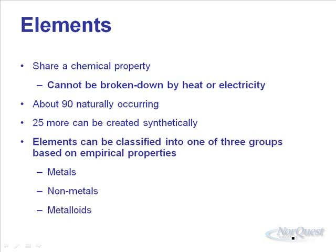Elements can be classified into one of three groups based on their empirical properties — things like state, shininess, and ductileness. They can be classified as either a metal, a non-metal, or a metalloid.